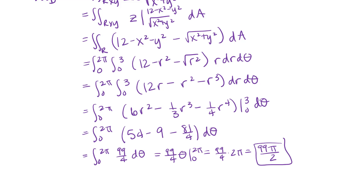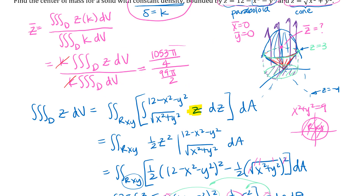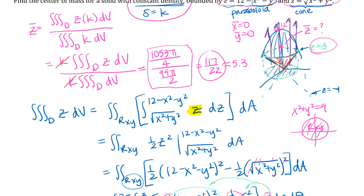Putting the numerator over the denominator and simplifying gives 117 over 22, which is approximately 5.3. The paraboloid has a z-intercept of 12 and the two surfaces intersect at z equals 3, so a center of mass around 5.3 is a reasonable answer. Remember, the answer is a point, so write it as the ordered triple: (0, 0, 117/22).